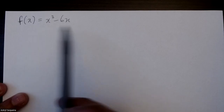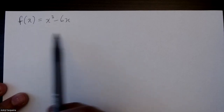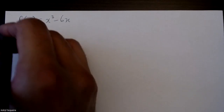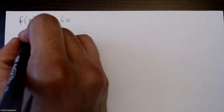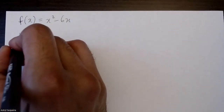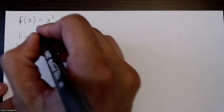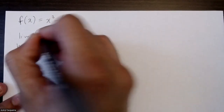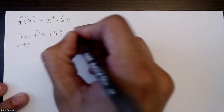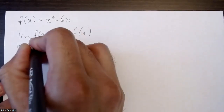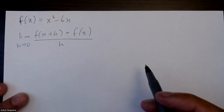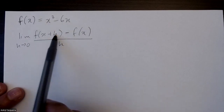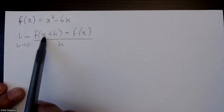We want to derive this equation using first principles, also called the definition of derivative. The formula is: the limit as h approaches 0 of f(x+h) minus f(x), divided by h. We have to start by replacing x with x+h in the equation.